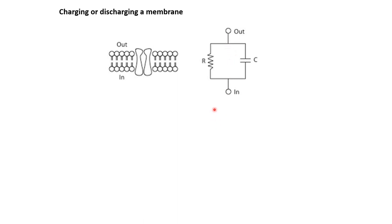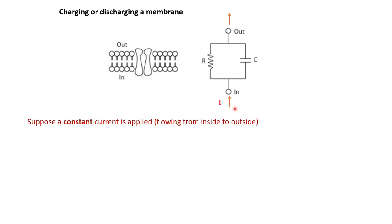Now when we apply a constant current source, say we have two stimulating electrodes — one inside, one outside — and we start passing some current from inside to outside. This constant current I that we have applied through these stimulating electrodes will flow from this terminal towards this terminal and it can take two possible paths: it can go through the resistor or it can go through the capacitor. So in the beginning, will the current be split equally? No.